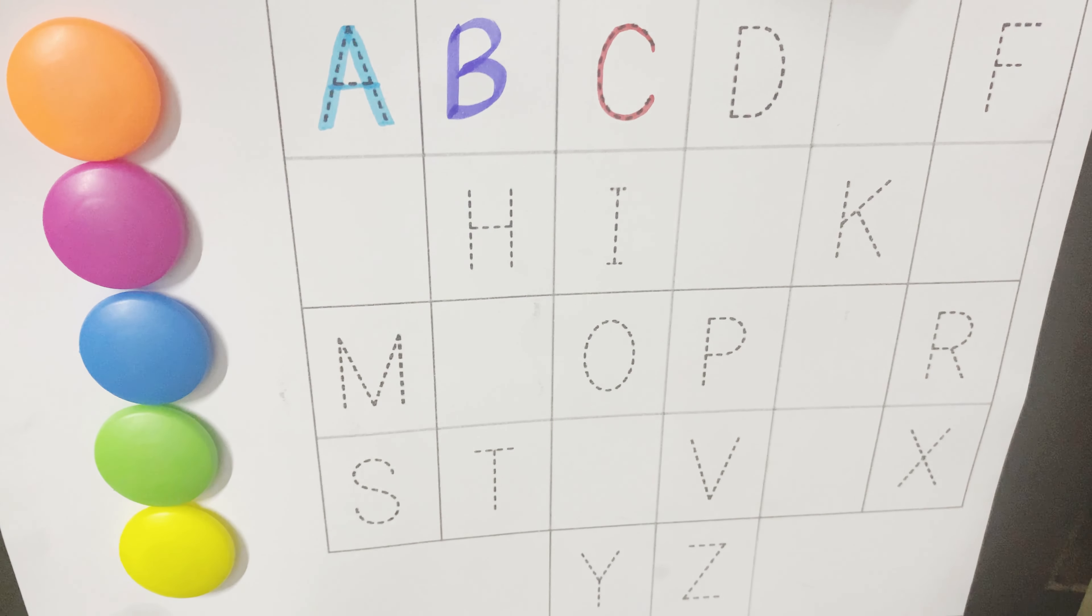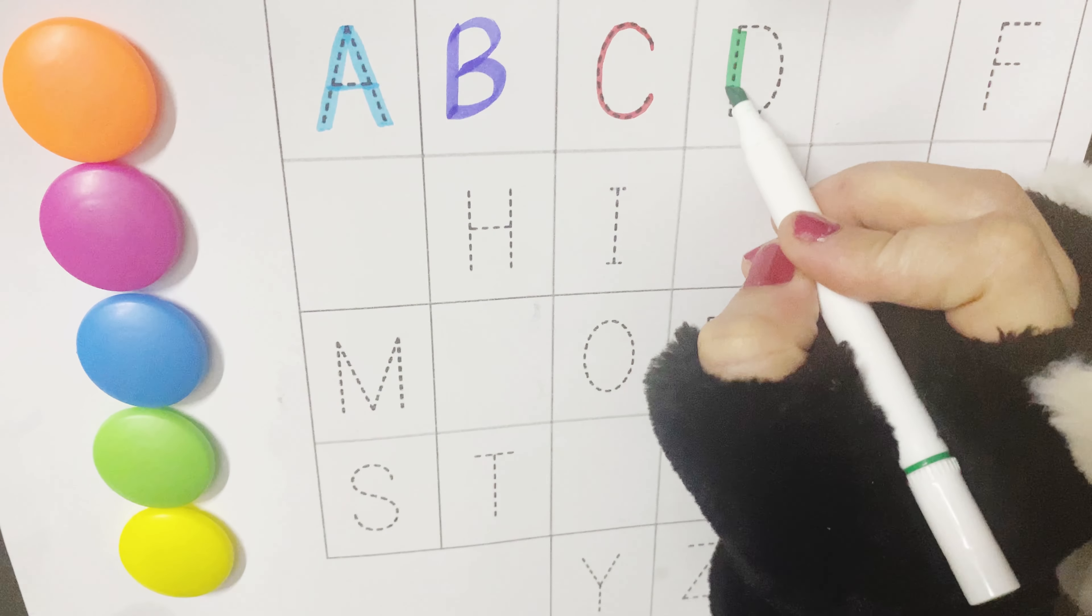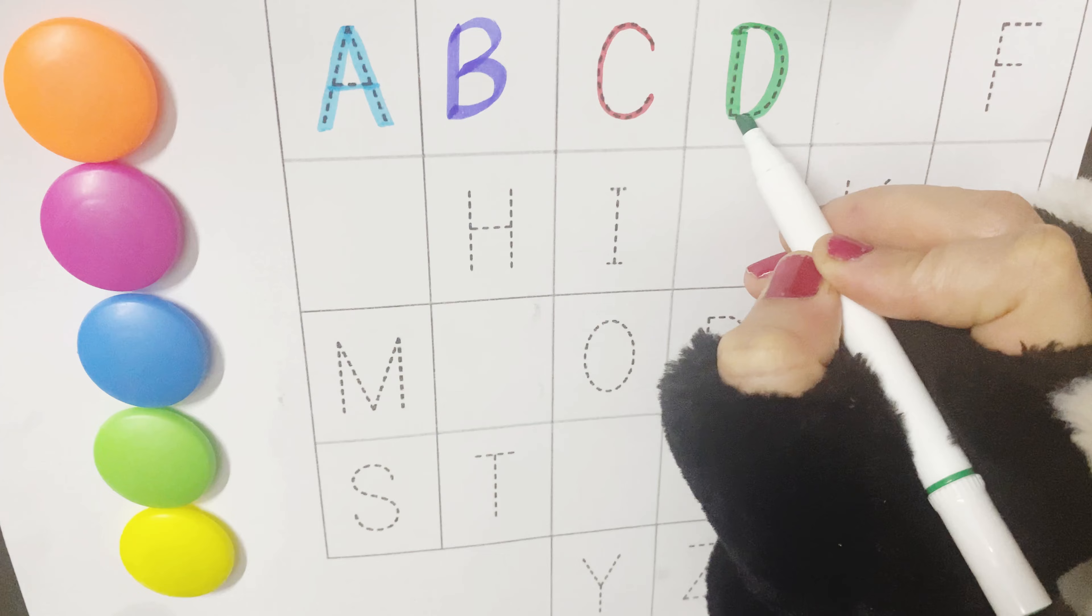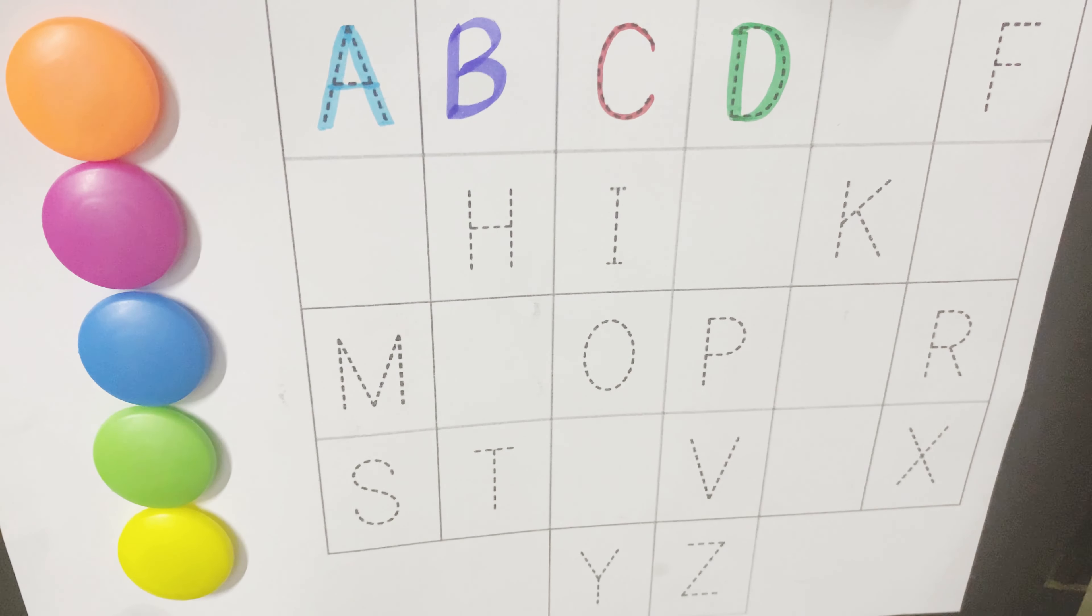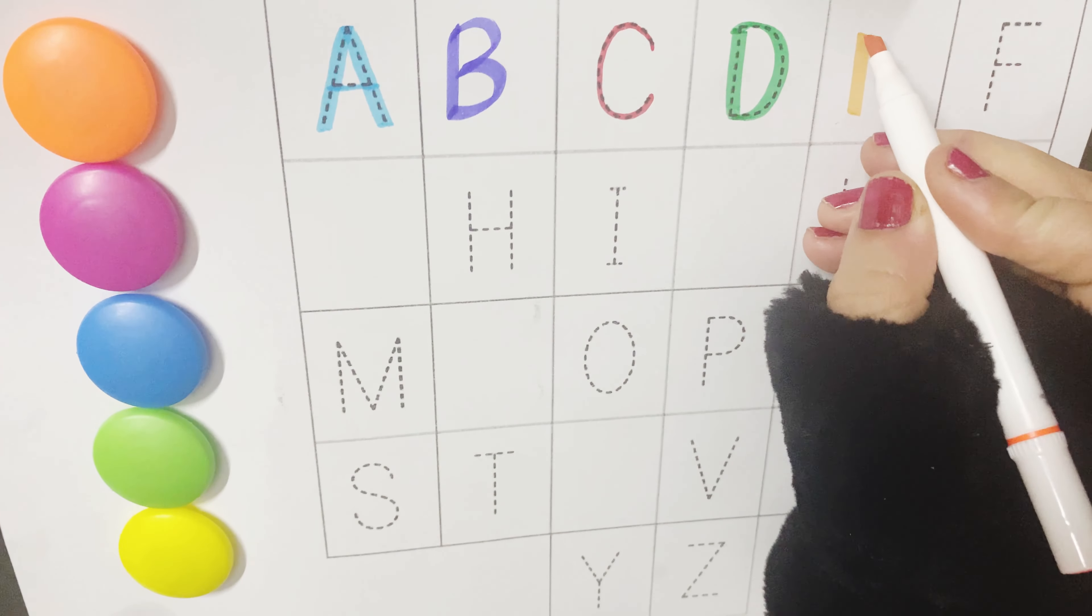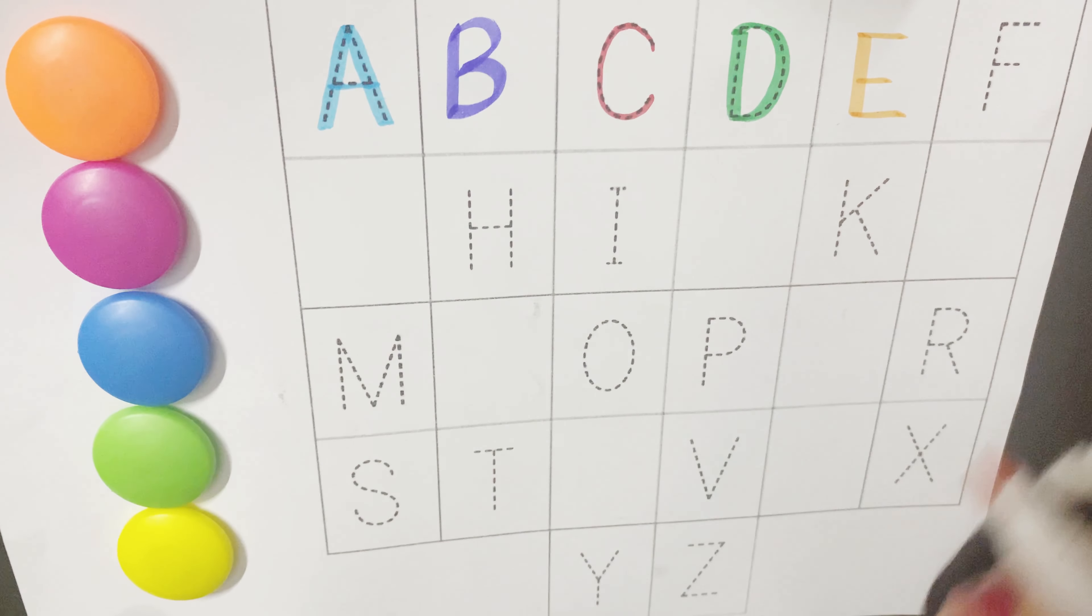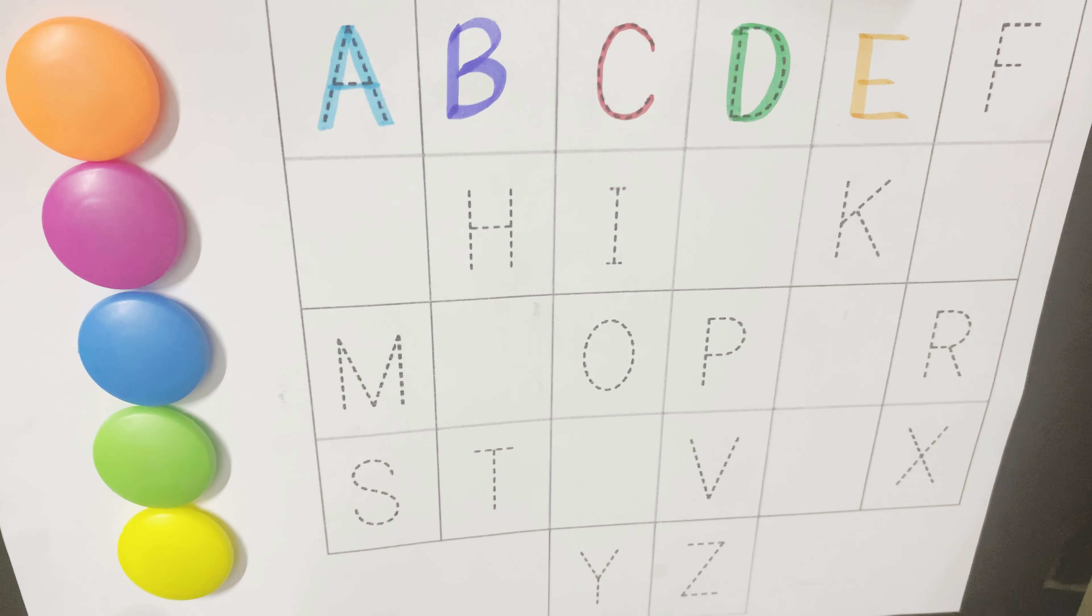What comes after C? It's a D. D is for dolphin. E. E is for egg. Who likes egg? I like to eat egg.